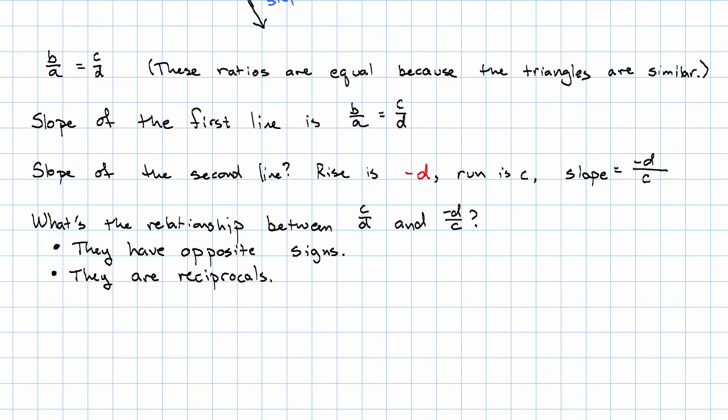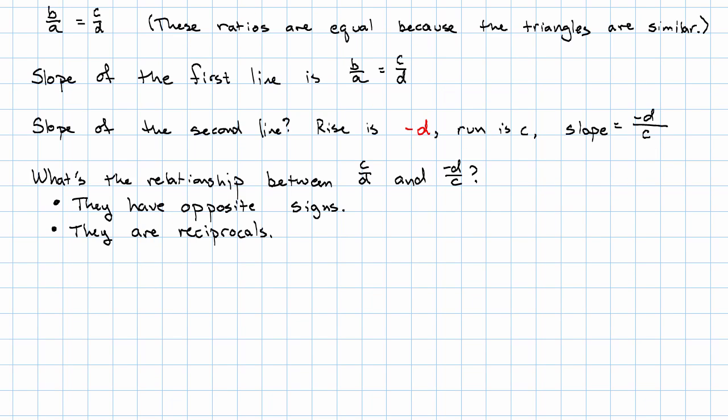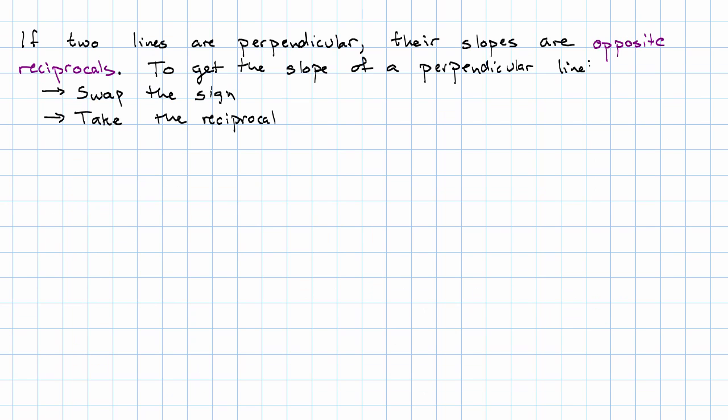And that's going to work out in general any time we have two perpendicular lines. If two lines are perpendicular, their slopes are opposite reciprocals. So that means to get the slope of a perpendicular line, we swap the sign and take the reciprocal. We can actually use this to draw perpendicular lines.